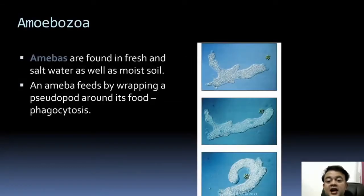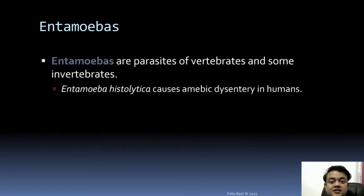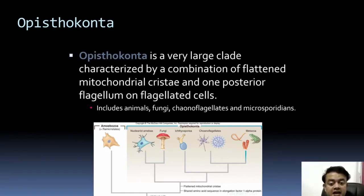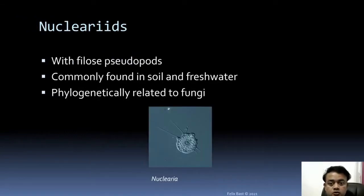Amoebae live in fresh and salt water as well as moist soil. Amoeba feeds by wrapping around its prey using pseudopods — this is phagocytosis. Entamoebas are parasites of vertebrates and some invertebrates, causing amoebic dysentery. Opisthokonta is a large clade characterized by flattened mitochondrial cristae and one posterior flagellum on flagellated cells. It includes animals, fungi, choanoflagellates, and microsporidia.